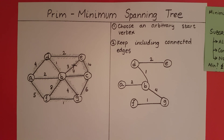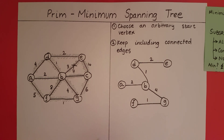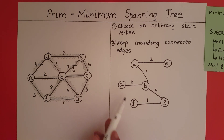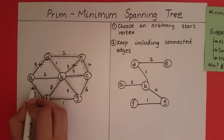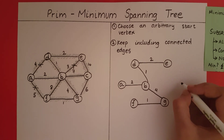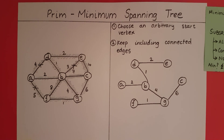Now, out of the remaining edges not yet included, which is the minimum? We have an edge of 4, but we cannot include it because it forms a cycle. After that, we have a 5, but that would create a cycle between A, B, G, and F, so we cannot include it either. We then go to 6 — can we include this 6? Yes, because it doesn't form a cycle.